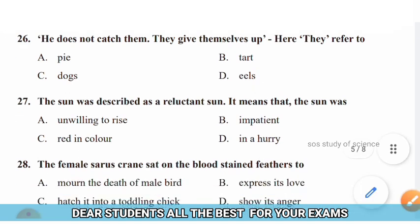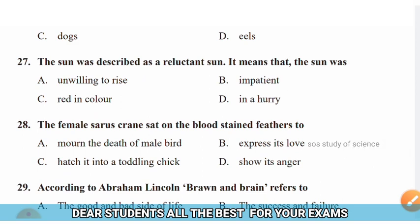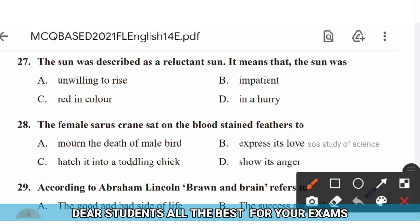Question 27: The sun was described as 'reluctant sun.' It means that the sun was — options: unwilling to rise, impatient, red in color, in a hurry. The right answer is option A — unwilling to rise.